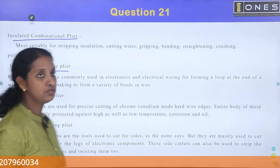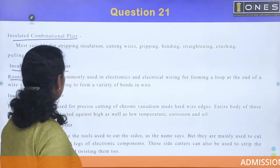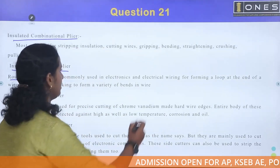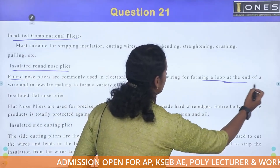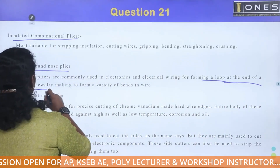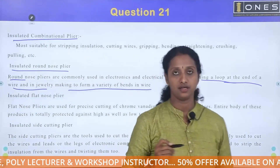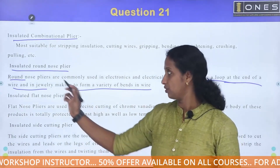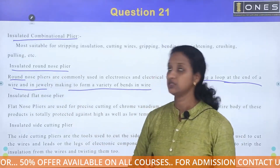Insulated round nose pliers — the end shape is used for forming a loop at the end of a wire. In jewelry making, they are used to form a variety of bends in wire.